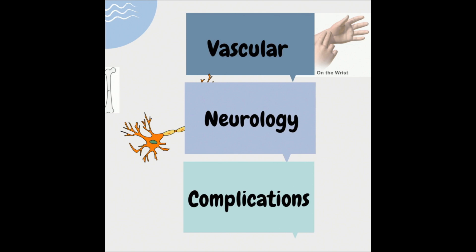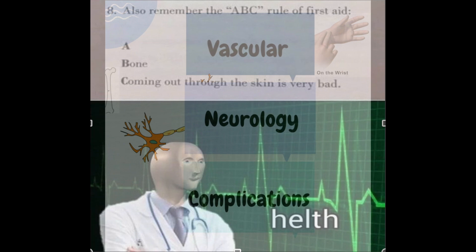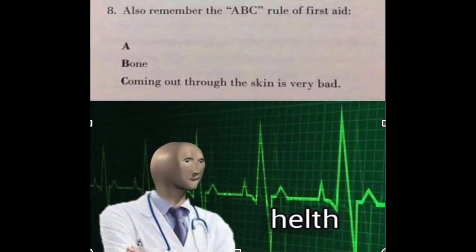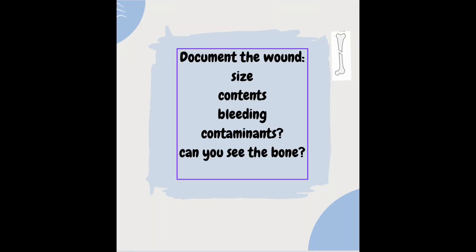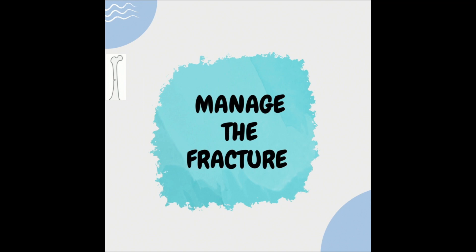Assess the risk of any short-term complications like compartment syndrome, rhabdomyolysis, and crush injury, and manage accordingly. If the fracture is open, remember to document the wound by taking extensive notes describing the size, the visible contents, the extent of bleeding, and the presence of any contaminants — or you can simply take a picture. Open fractures also need to be cleaned with saline and wrapped with a wet saline dressing while awaiting surgery. At this point, the patient can be sent to x-ray.